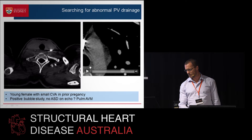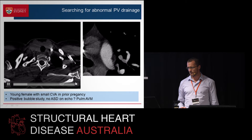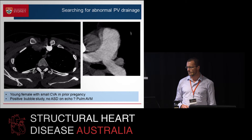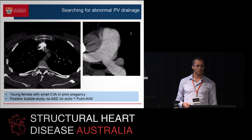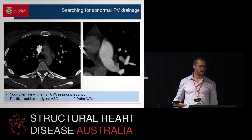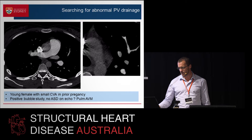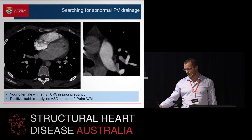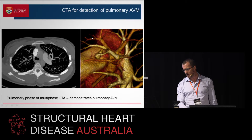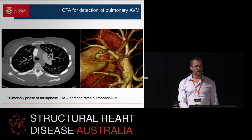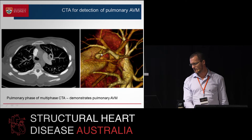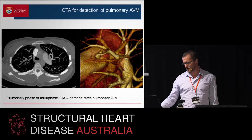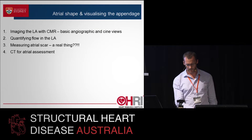This is a case sent to us — a young lady who had had a pulmonary AVM in the past that had been coiled and wanted to get pregnant again. The question was there was a strongly positive bubble study but no one could find where it was coming from and whether there was another pulmonary AVM. When you play around with it and look at it properly, it is quite an obvious pulmonary arteriovenous connection. She had actually had a small stroke and we're going to go in and facilitate coiling of that.